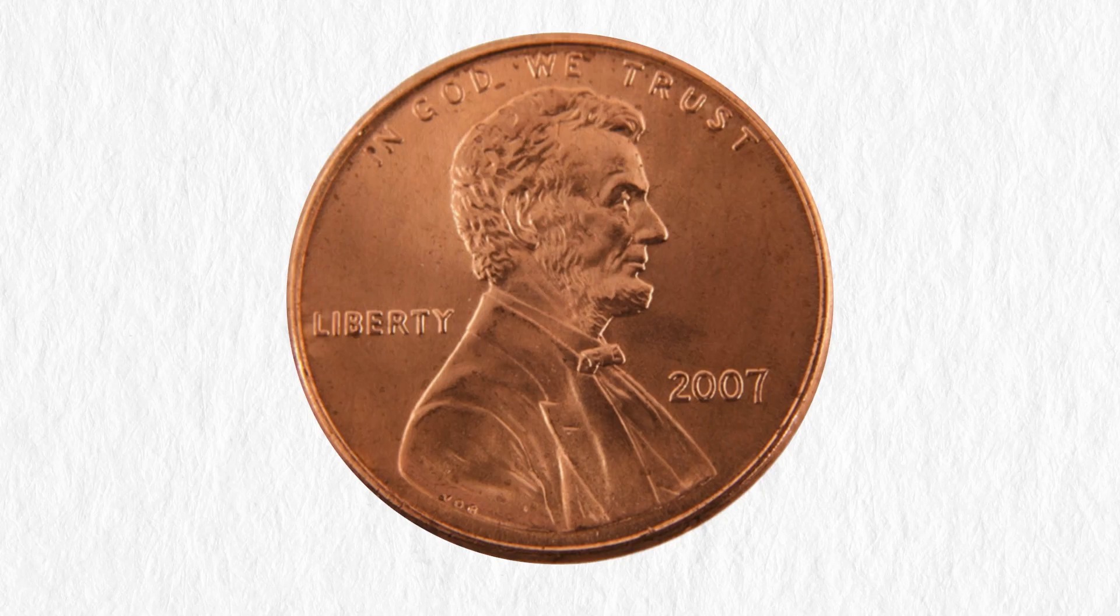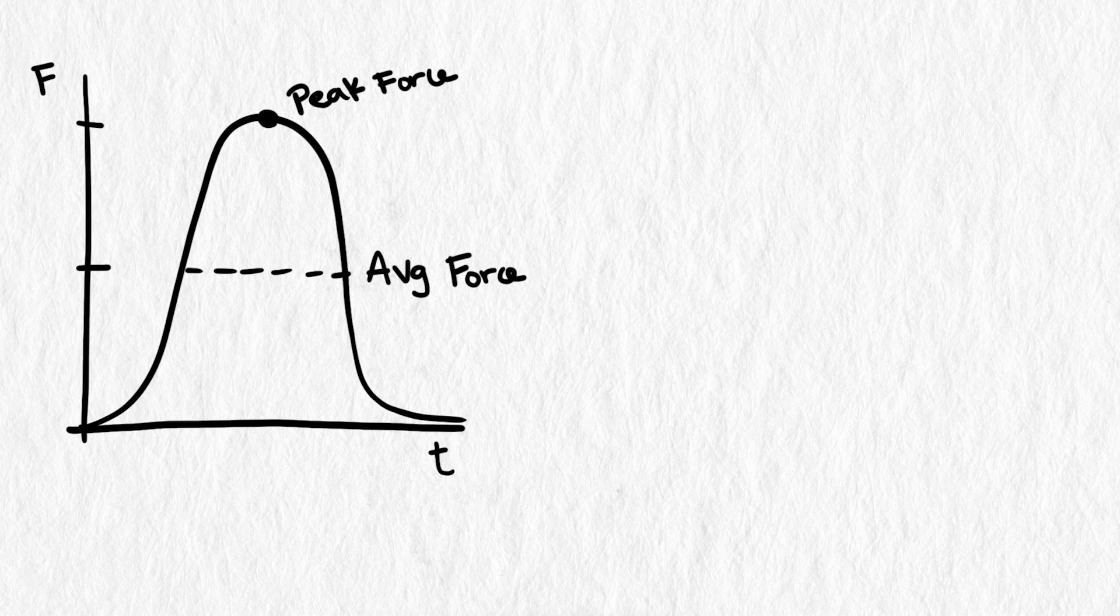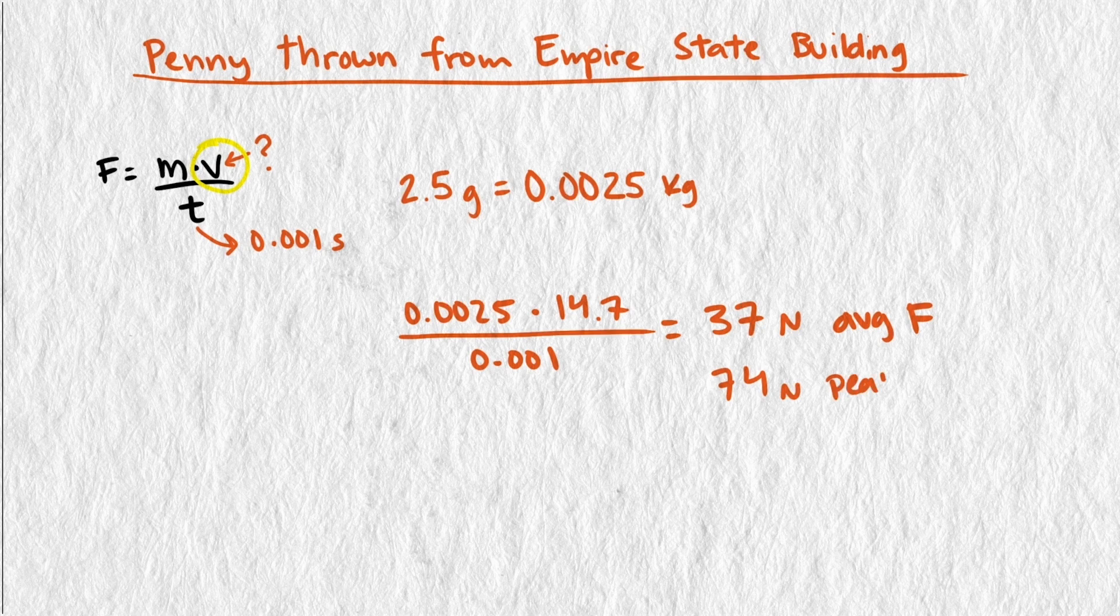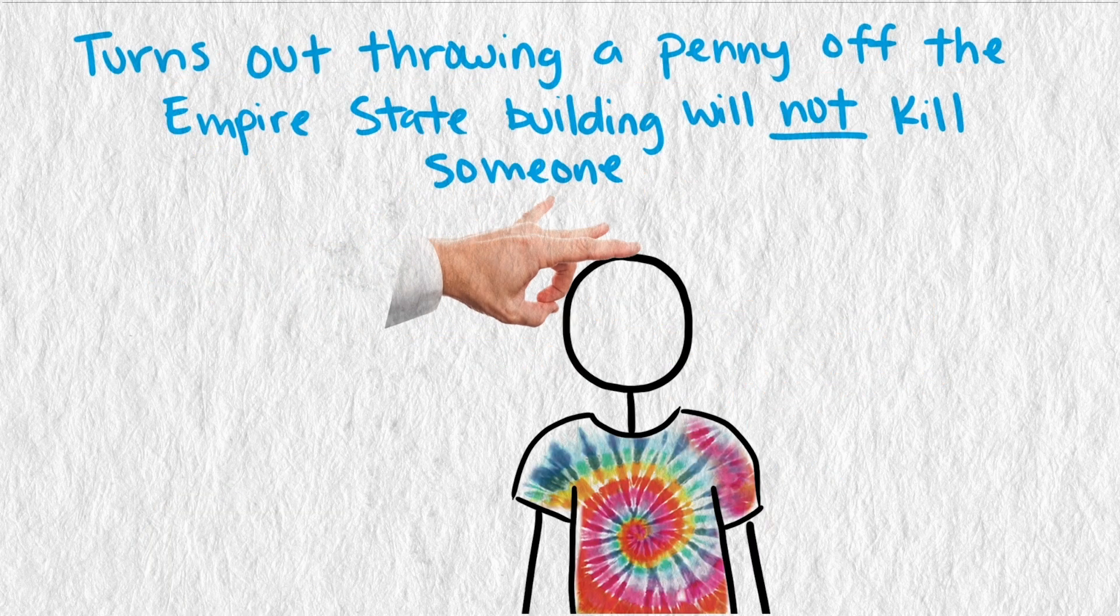In order to determine if a penny could kill someone, we calculated its average and peak impact force and compared it to the impact force of some situations where we know people have died from blunt objects hitting them in the head. We explored both a boxing scenario and a baseball scenario, and determined that around 3,700 to 5,500 newtons is needed for a fatality. Our penny, on the other hand, only generated about 74 newtons at its peak, only enough to really feel like a flick to the head.